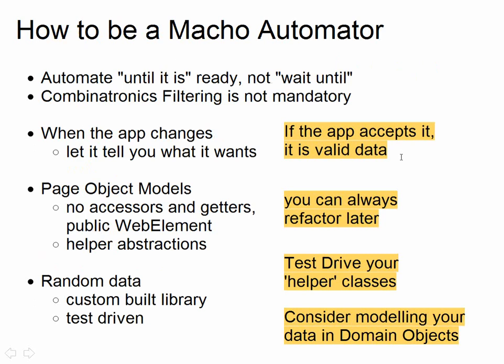The basic lessons here — if you want to do automation the way MacGyver would do it, the way the Expendables would do it — the basic principles are: automate until it's ready, not wait until the system is ready and all testing is done and then automate it. Just do it first. Do it in parallel. Do it with abstraction layers.